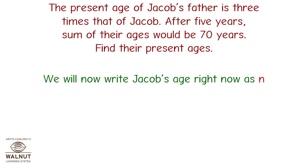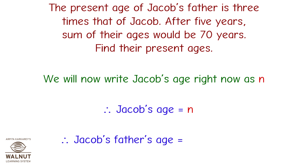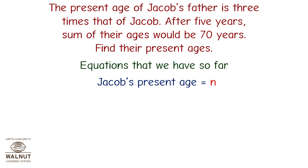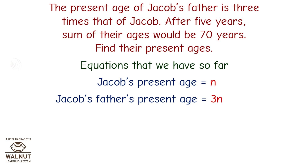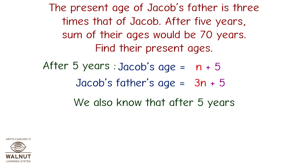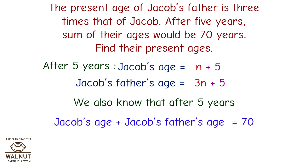We will write Jacob's age as n. Therefore Jacob's father's age is equal to 3n. The equations so far: Jacob's present age equals n, Jacob's father's present age equals 3n. After five years, Jacob's age equals n plus 5 and Jacob's father's age equals 3n plus 5. We also know that after five years their ages add up to 70, so n plus 5 plus 3n plus 5 equals 70.